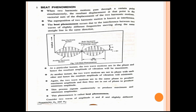When the two wave motions are in the same phase, the resultant amplitude of vibration will be maximum. At another instant, when the two wave motions are not in phase with each other, the resultant amplitude of vibration will be minimum. Again, they come into the same phase to produce maximum amplitude, then go out of phase to produce minimum amplitude. This process repeats itself continuously.